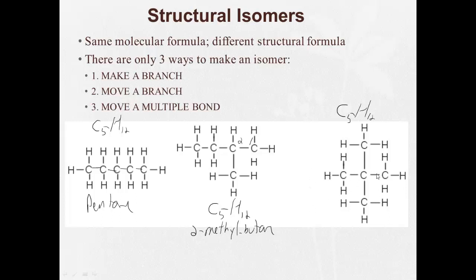And here we have the longest chain of 3, so it's propane. And on carbon number 1, 2, 3, there's one methyl group, 2 methyl groups. So we have 2,2-dimethylpropane.